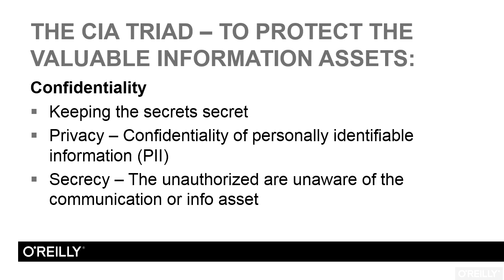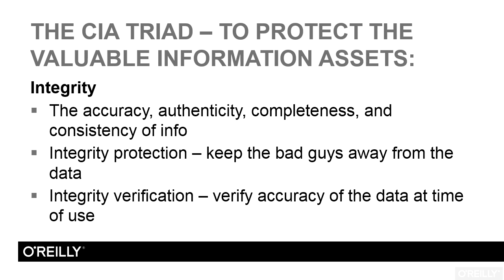We'll understand this a little bit more when we get into the domain that deals with cryptography. Confidentiality is the C in the CIA triad. Now the I in CIA is integrity. Integrity deals with the accuracy, authenticity, completeness, and consistency of information.